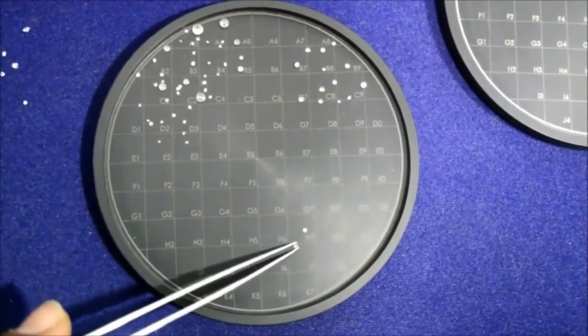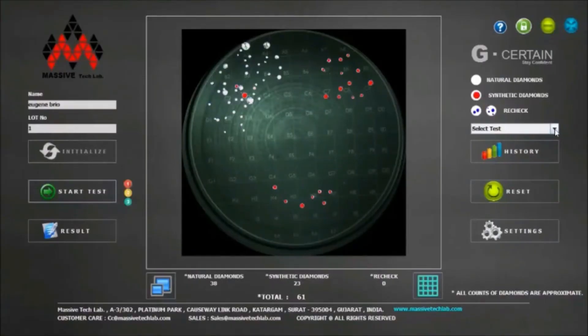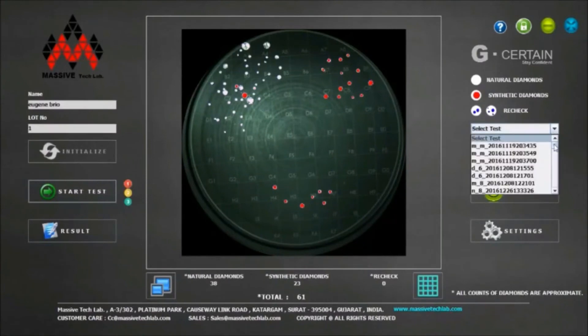For accessing result history, select test name and lot number combination from drop down menu and press history button.